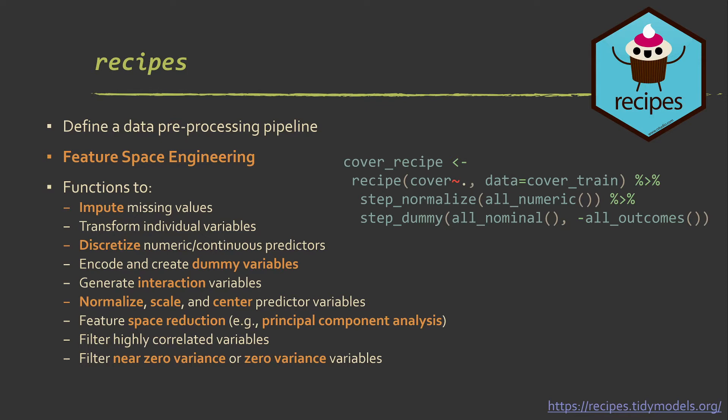So there are functions for imputing missing values if you have null values or data gaps, for transforming individual variables, like centering, scaling variables. Discretizing numeric or continuous predictors, like binning ranges to create an ordinal variable from a continuous variable. Encoding categorical variables as one-hot encoding or dummy variables. That's necessary for certain types of models, not others. Generate interaction variables, like interaction terms. That's common like regression techniques, like multiple linear regression. Normalize scale and center single predictor variables. Do feature space reduction. For example, you can use this to perform principal component analysis. You can remove highly correlated variables. So if there's a correlation above 0.8 or whatever, you can set a threshold. You can remove variables. You can also get rid of variables that have low or zero variance or, effectively, there's no information.